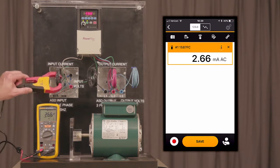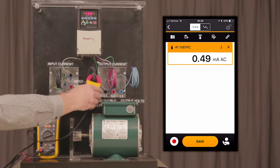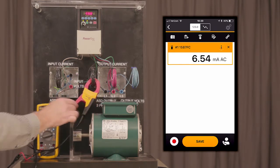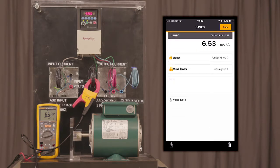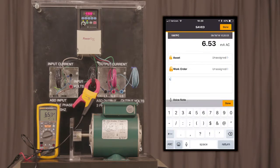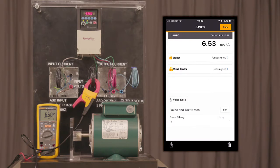Let's go ahead and now make a measurement on the output of the VFD for L1, L2, and L3. We'll save this measurement for L1, 6.5 amps. You will repeat this for all three phases.